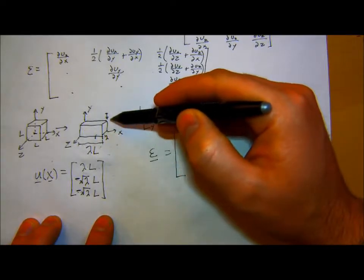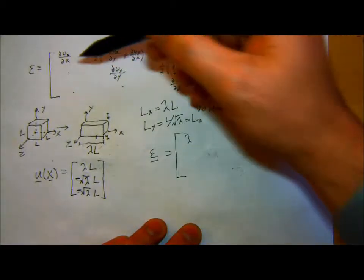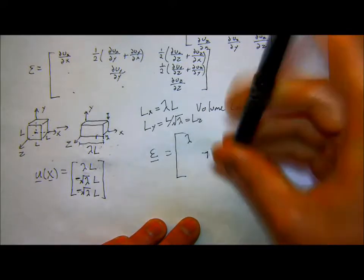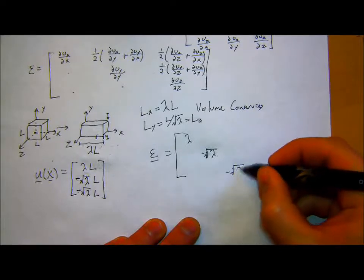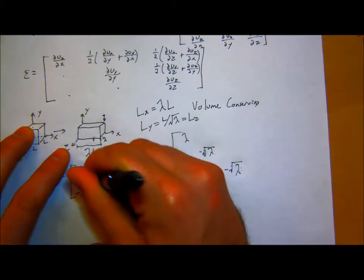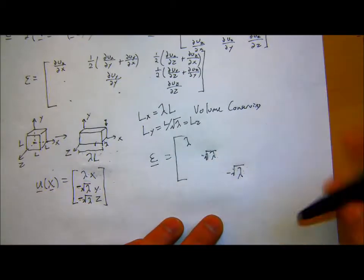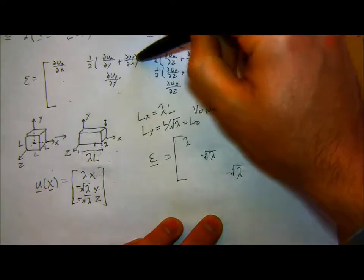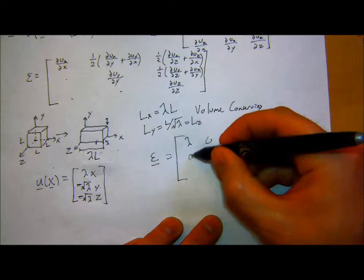My strain: if I take the derivative of each component, the derivative of X with respect to Y and Y with respect to X is zero, so all the off-diagonal components are zero. My strain is now just the diagonal: lambda, minus square root of lambda, minus square root of lambda, and zeros elsewhere. We got through one of the examples. So this is the general strain in a body that's being uniaxially stretched.